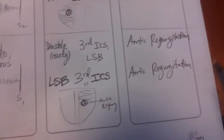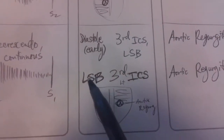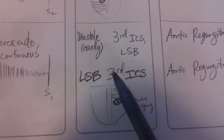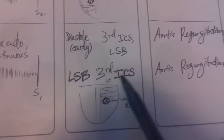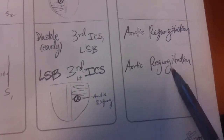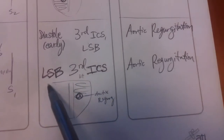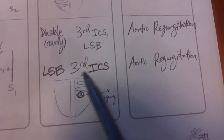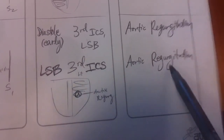And again, for aortic regurgitation: 'who's left on third' — left sternal border, third intercostal space, aortic regurg. Hope this helps.